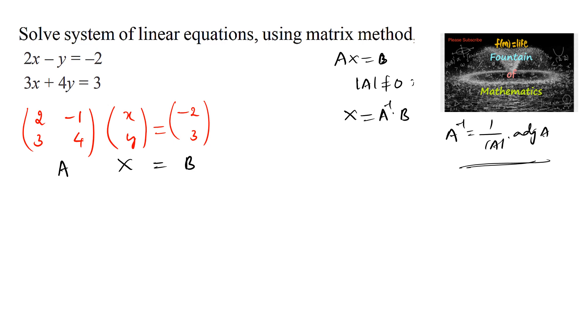Let's find the determinant of matrix A. Determinant of 2, negative 1, 3, 4, which is equal to 2 into 4, 8 minus negative 1 into 3 is negative 3. So which is 11, and we can see it is not equal to 0.